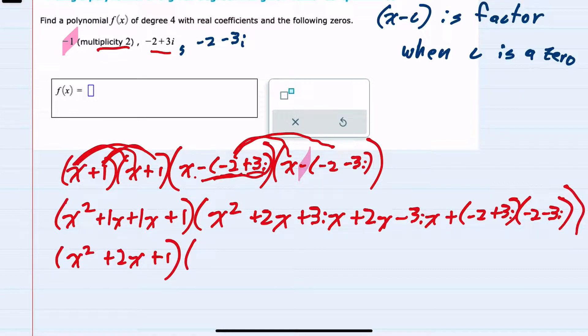But I can also combine some like terms. There's only one x squared, but I do have a 2x and a 2x, that'll combine to be 4x. And a plus 3i and a minus 3i, those will cancel.